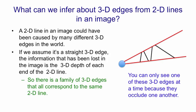You can only see one of these 3D edges at a time because they all get in the way of each other. So now we're in a position to see a little example of what you might be able to do if you can use the fact that you can find low energy states of a network of binary units to help you find interpretations of sensory input.